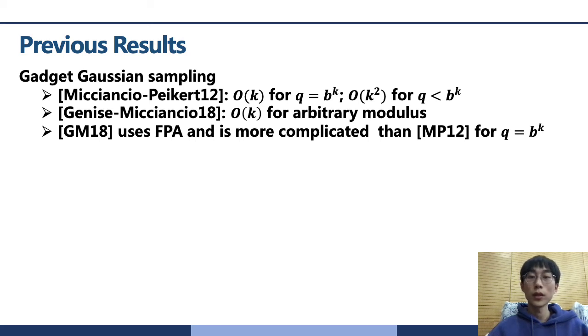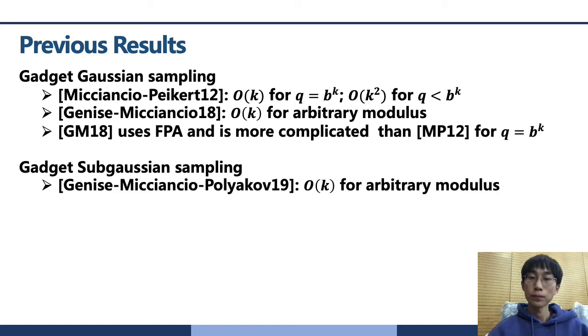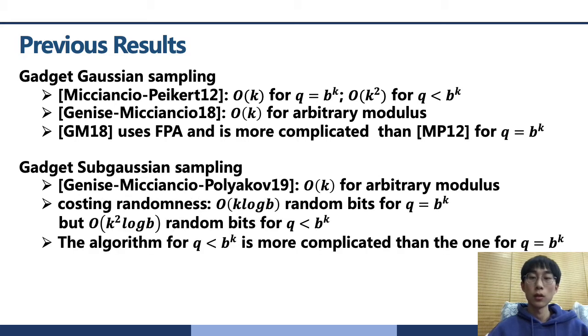As for the gadget sub-Gaussian sampling, Genise-Micciancio-Polykov's work gave a sub-Gaussian sampling with linear time for arbitrary modulus. For the modulus of power B, they cost k log B random bits. But for arbitrary modulus, they cost k squared log B random bits. And the algorithm for arbitrary modulus is more complicated than the one for power B modulus. So there existed some gaps between the gadget algorithms. To close these gaps is not only of theoretical interest, but also crucial for practical applications.